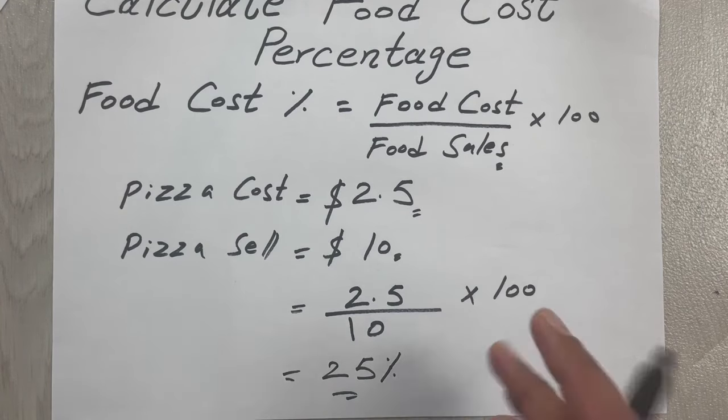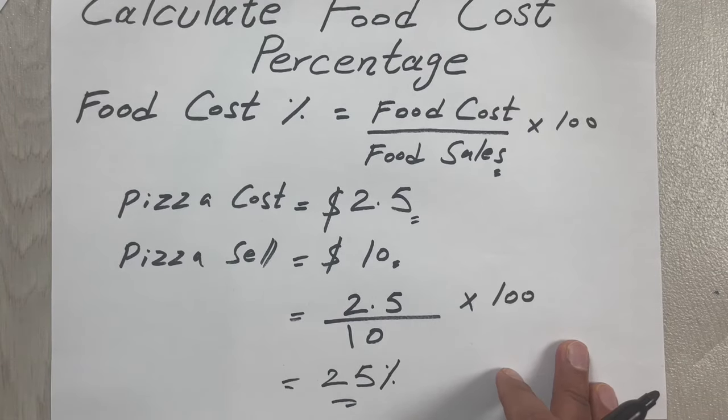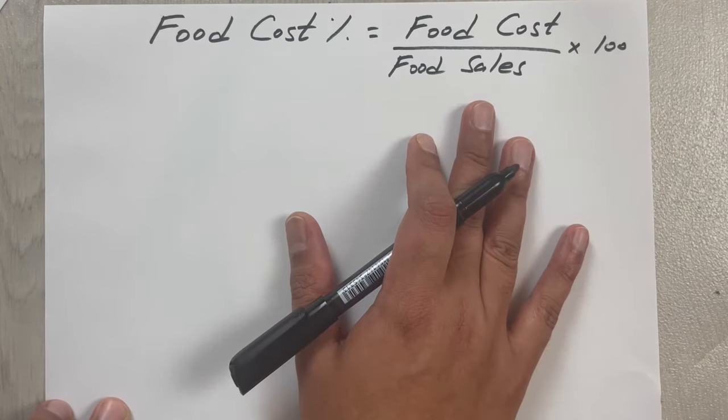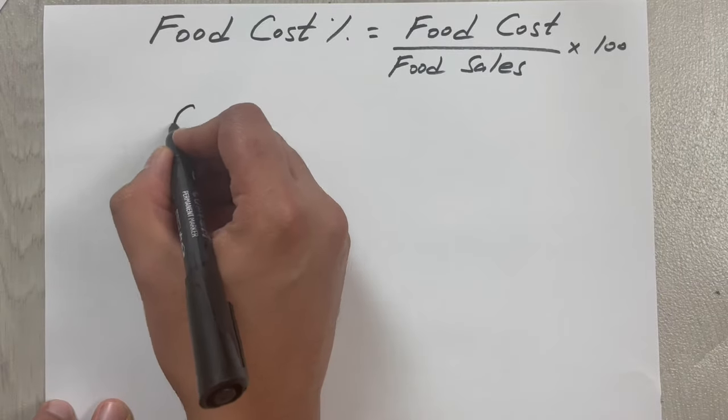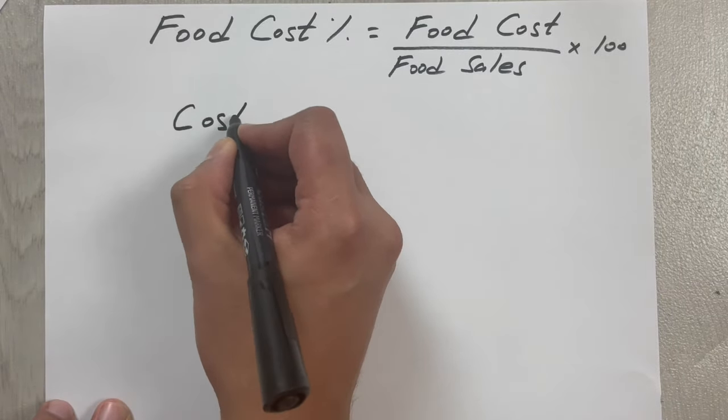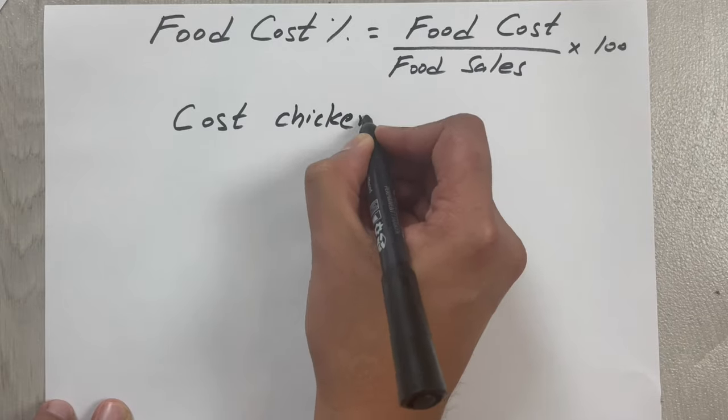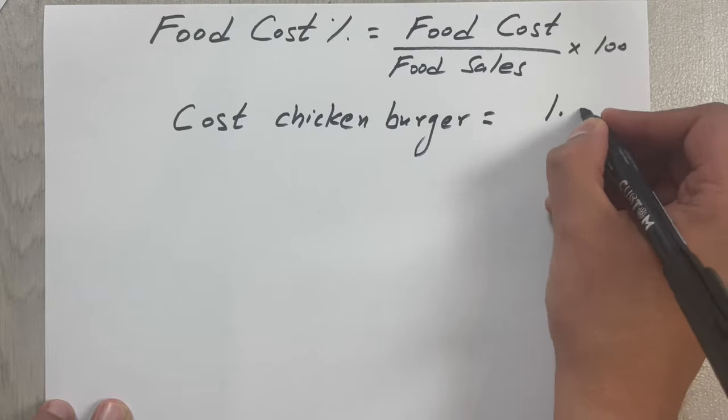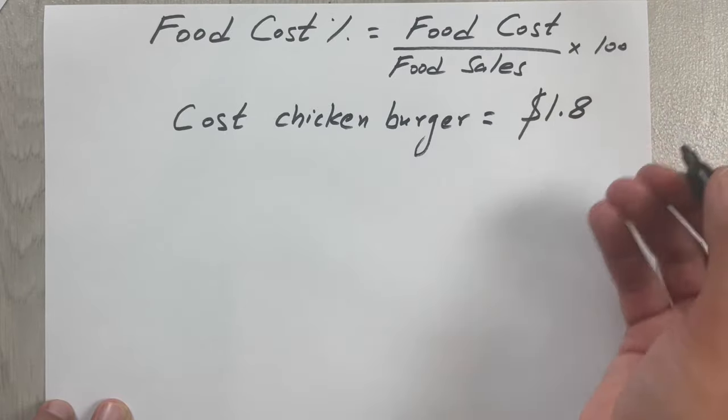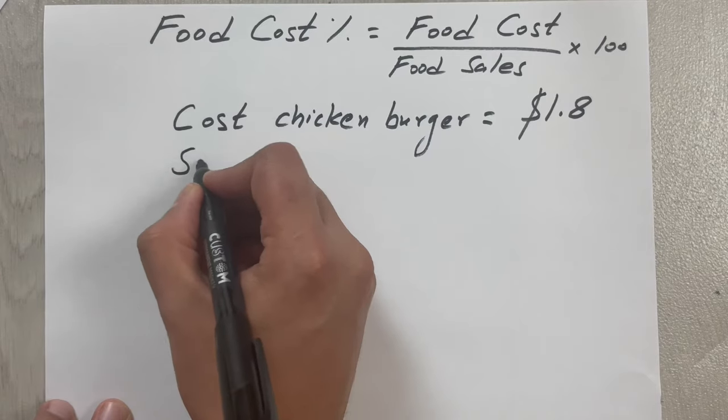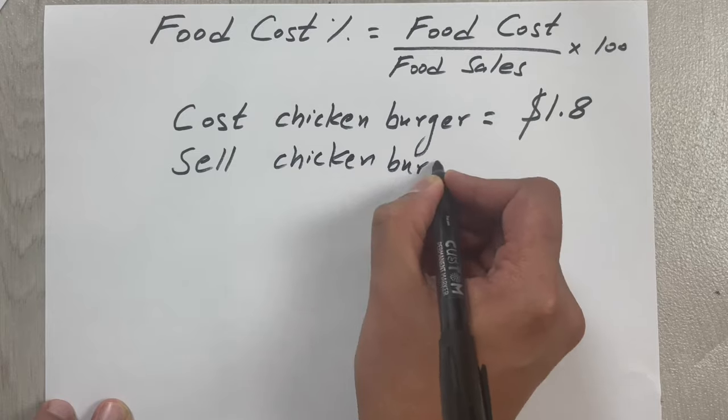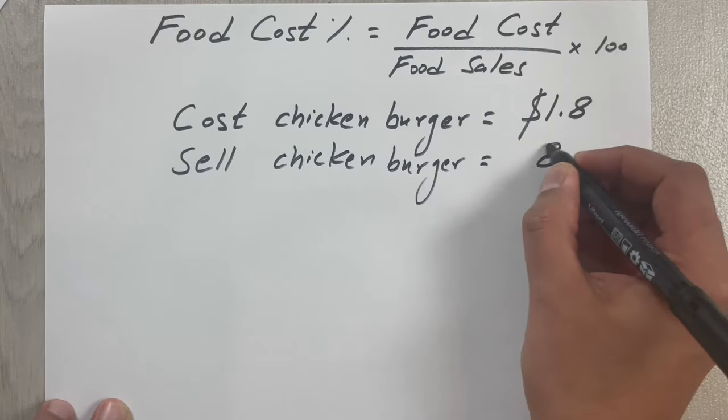Let's move to one more example. I already put the formula for the food cost percentage here. Let's say we have a chicken burger and the cost of that chicken burger is $1.80, and you sell that chicken burger at $8.